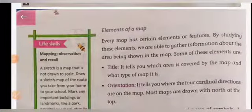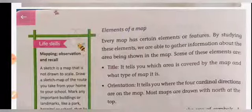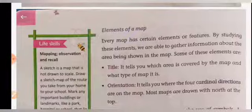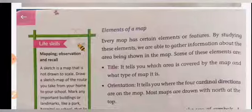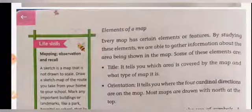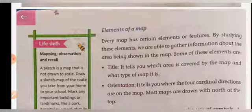Every map has certain elements or features. By studying these elements, we are able to gather information about the area shown in the map. Every map has special characteristics to help us understand it — symbols and objects placed on the map tell us what type of place is located there. The first element is the title. The title tells you which area is covered by the map and what type of map it is.